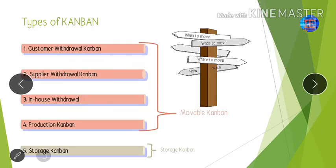There are mainly two categories of Kanban: movable and storage. Under movable, there are four types: customer withdraw Kanban, supplier withdraw Kanban, in-house withdraw Kanban, and production Kanban. The fifth type is storage Kanban.